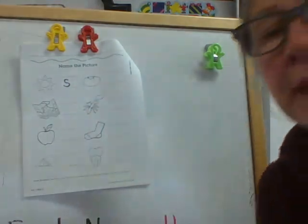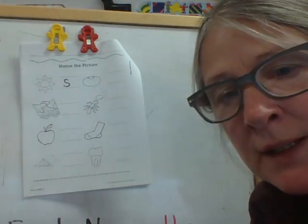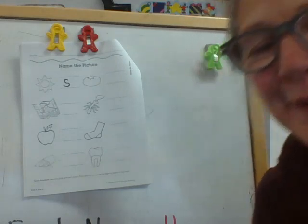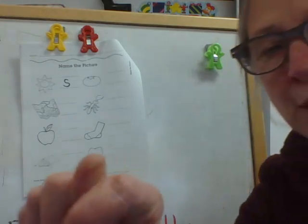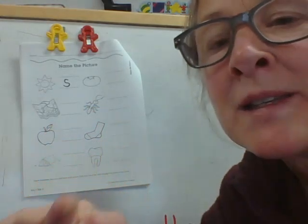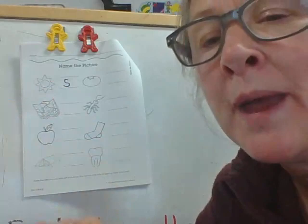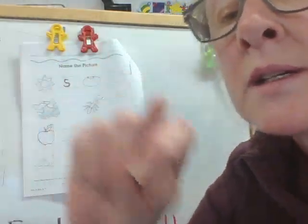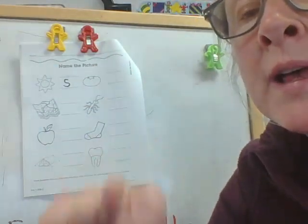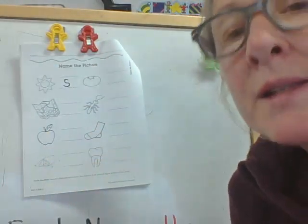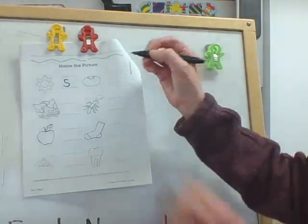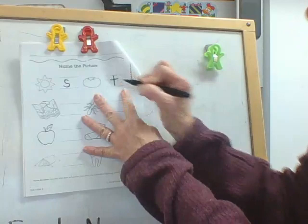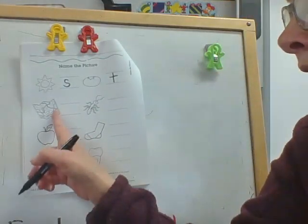Now we go here. What do you think it is? That's right, it's a tomato. So we're going to bounce on tomato. T-t-tomato. It's the letter T.